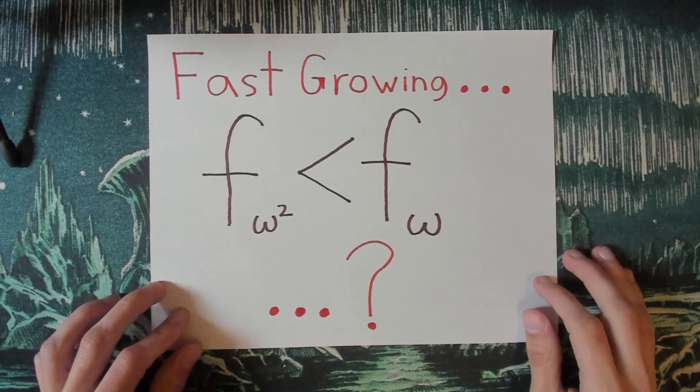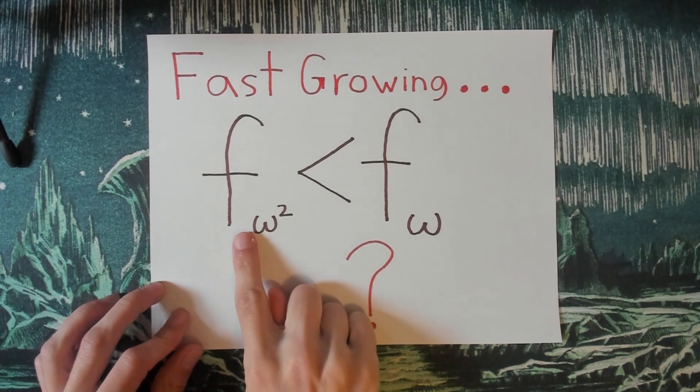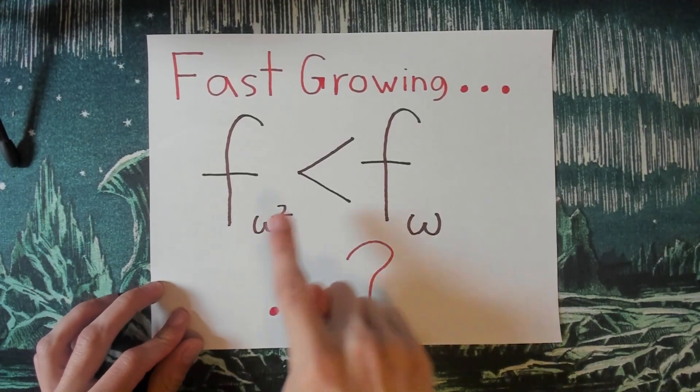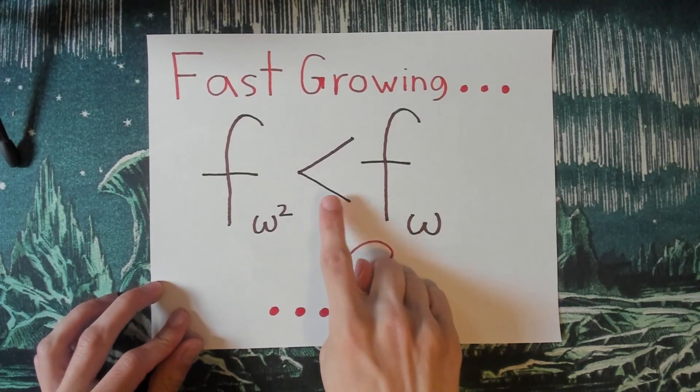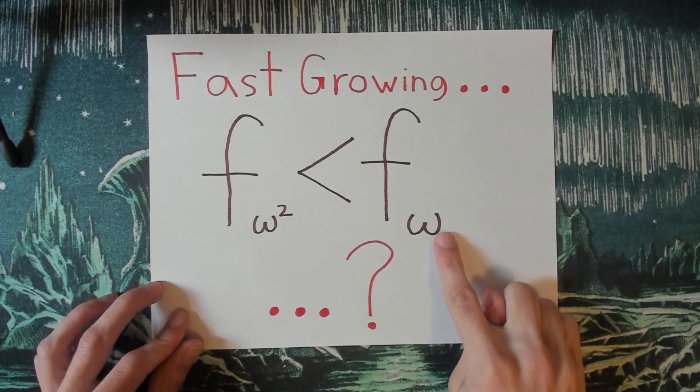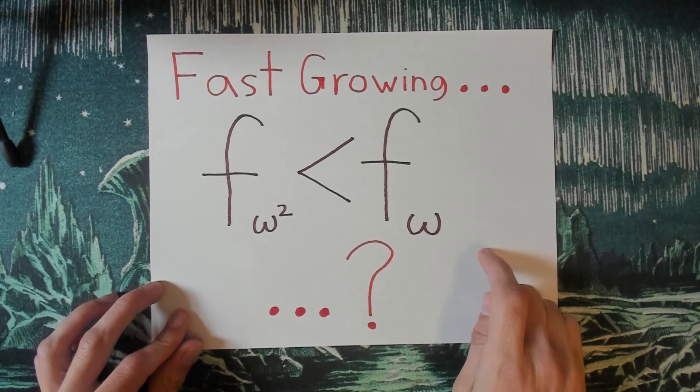How is it even possible that a function higher up in a fast-growing hierarchy can grow more slowly than a function lower down in a fast-growing hierarchy? Well, this kind of thing can happen if you choose your fundamental sequences in the right way, and we're going to go over an example of that.